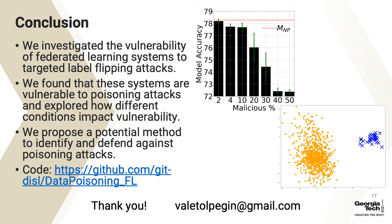Through our exploration of the five research questions, we can conclude that federated learning is vulnerable to data poisoning attacks. Targeted label flipping attacks, which are particularly attractive for adversaries, can significantly impact source class recall and global model accuracy. By taking advantage of their availability and understanding the training process, adversaries can improve the effectiveness of their attack. We demonstrated a proof-of-concept system that can detect and identify malicious participants, and using this system, federated learning implementations can stop attacks before they compromise the integrity of the training process. We've open-sourced the systems used to conduct experiments on GitHub, and the link to the repository is included on this slide.